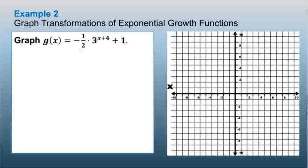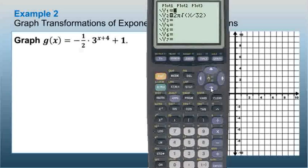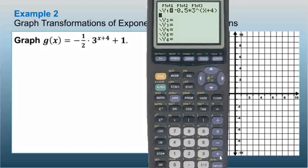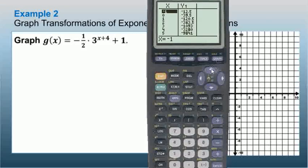Now we're going to graph the transformation of exponential growth functions. Here we have g(x) = −(1/2) · 3^(x+4) + 1. The parent function is 3^x with some transformations. We'll use our graphing calculator to find the points. In y equals, we type negative 0.5 times 3 raised to the quantity (x + 4), then plus 1. Hit graph to see the graph, then go to the table of values.